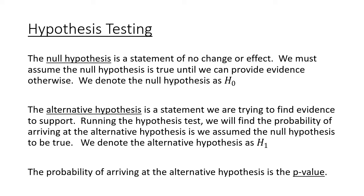The alternative hypothesis is really the statement that we're trying to find evidence to support — it's typically the whole reason we're doing our particular experiment. When we run our hypothesis test, we're trying to find the probability that we arrive at our alternative hypothesis, assuming that the null hypothesis was true. Assuming that the previous research is correct, what would the probability of getting our results actually be? That probability of arriving at those results is our p-value.